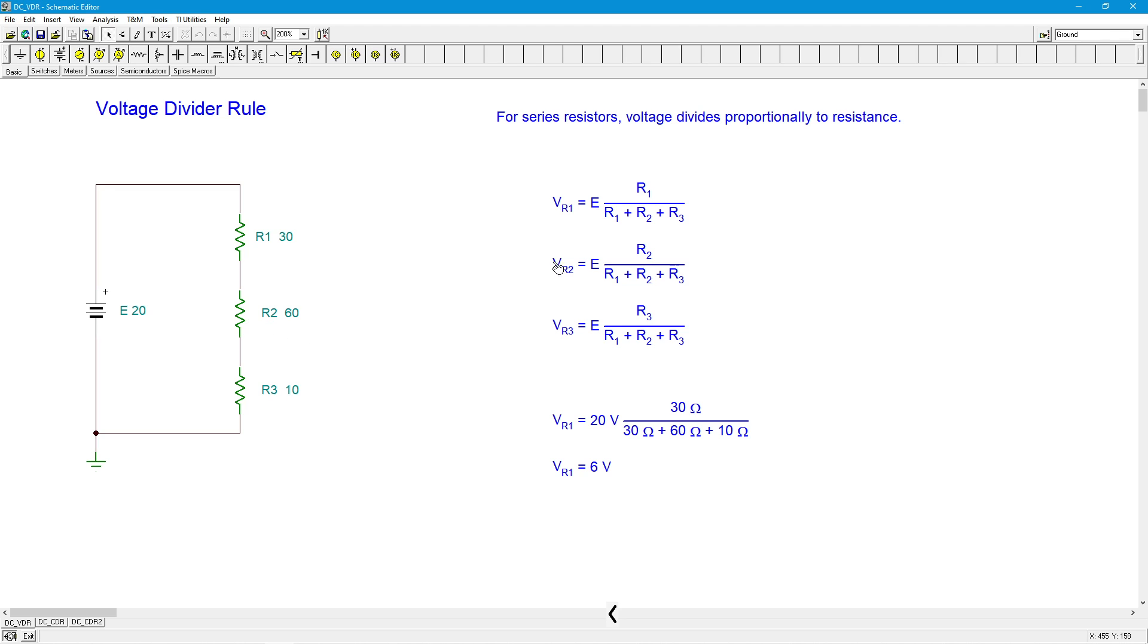You want to find R2's voltage, same deal, E times R2 divided by all those resistors. R3, it's R3 divided by all those resistors. So back to R1, I put 30 ohms in there, three resistors, 30, 60, and 10, that's 100. So I'm basically saying I'm going to get 0.3 or 30% of my supply, which is 20, that's 6 volts.